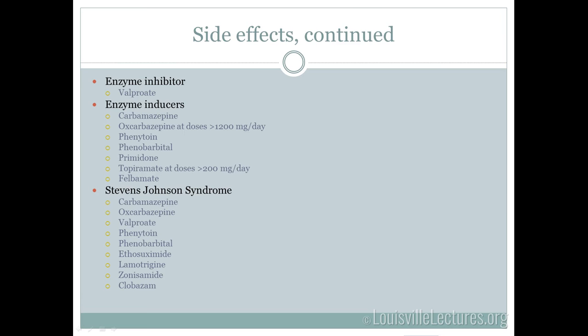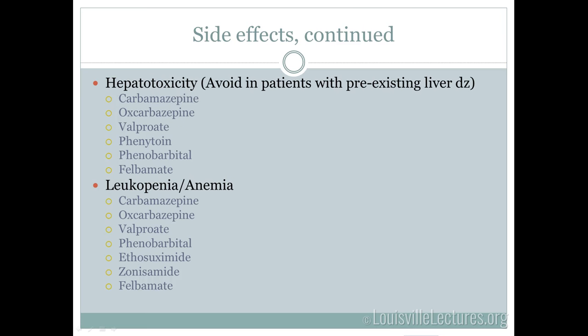Stevens-Johnson syndrome can be caused by most seizure medications — it's rare, but Lamictal has gotten a bad reputation for it. It's more often seen when medication is started too quickly at too high a dose, and it's seen more in people of Asian descent due to a certain HLA haplotype. Many medications can cause hepatotoxicity — if someone has hepatitis C, you probably don't want to start Dilantin. Hepatotoxic medications include Tegretol, Trileptal, Depakote, and Dilantin. Many medications can also cause leukopenia or anemia, so if routine labs show a dropped white blood cell count, a seizure medication may be the cause.